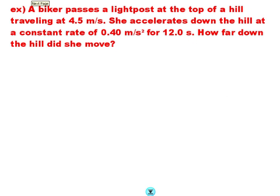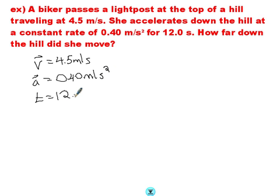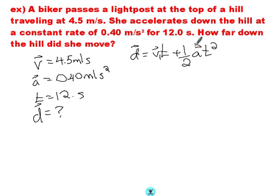Let's try this one out. A biker passes a light post at the top of a hill, traveling at 4.5 meters per second. Hey, that sounds a little bit like an initial velocity to me. I'm going to write that down as an initial velocity. She accelerates down the hill at a constant rate of 0.40 meters per second squared. And for a time of 12 seconds. How far down the hill did she move? Ooh, this looks like a good equation or a good question for me to use this other kinematics equation. Displacement equals vit plus 1 half at squared. Perfect opportunity to use this one.